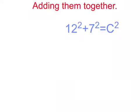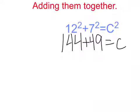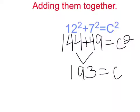After we transfer 12 and 7, we are going to square 12, which will get us 144, plus 7², which equals 49, and that equals C². Then we add these two together, which will give us 193 equals C².